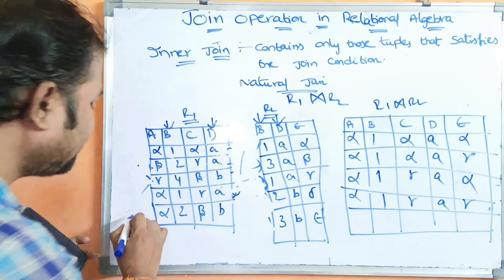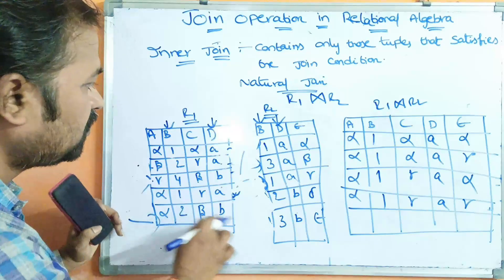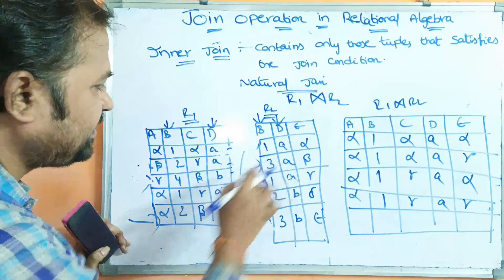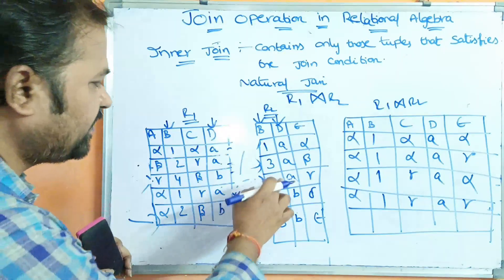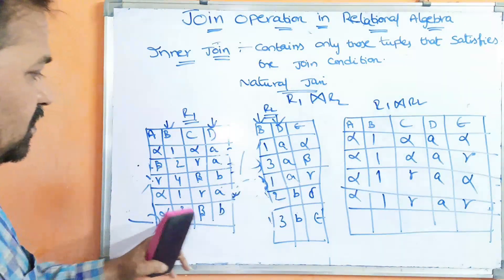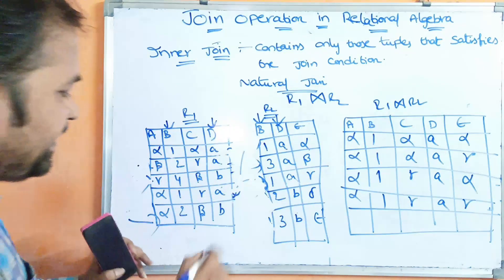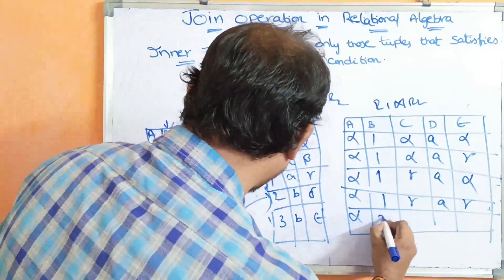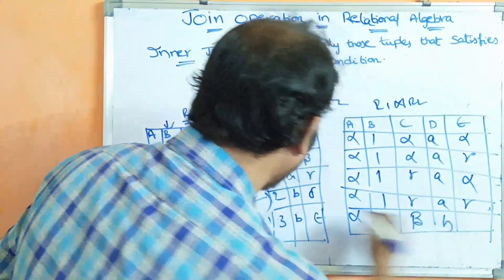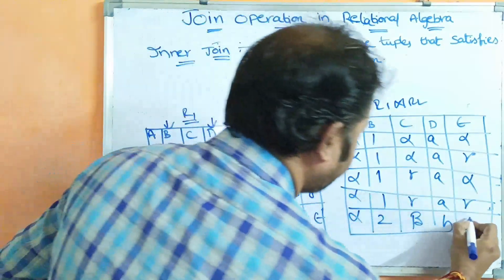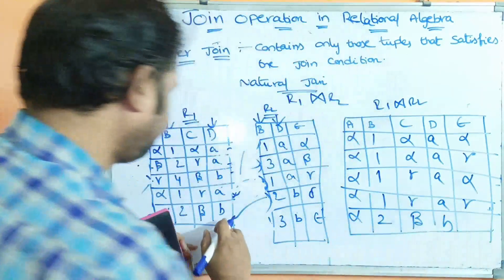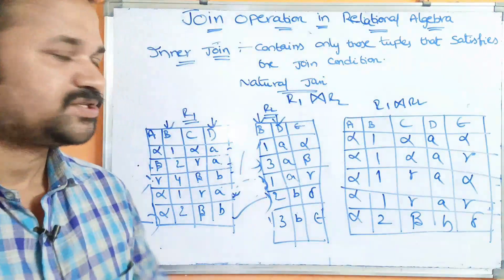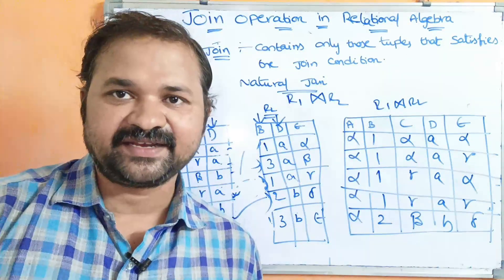Now let us consider the last row. 2B compared with 1A — not equal. 2B compared with 3A — not equal. 2B compared with 1A — not equal. 2B compared with 2B — equal! So we have to combine these two rows: Alpha, 2, Beta, B, and E is Delta. So this is about natural join.